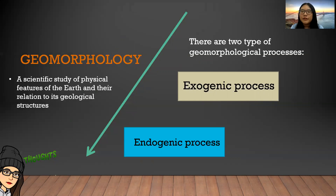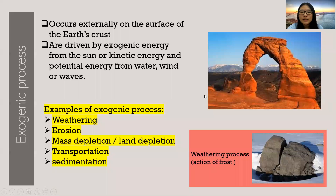There are two types of geomorphological process, which is the exogenic and endogenic process. Let's start off by talking about exogenic. The process occurs externally on the surface of the Earth's crust and is driven by exogenic energy from the sun, or kinetic energy and potential energy from water, wind or waves.